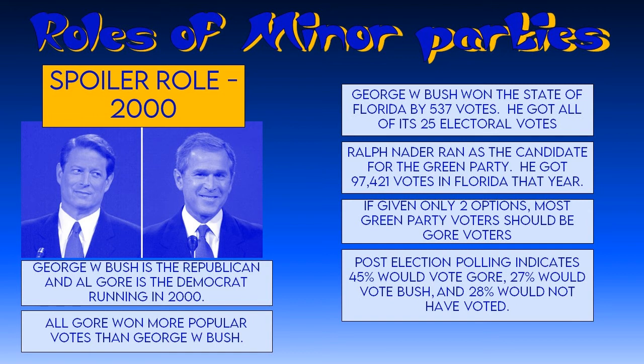After the election, they polled Green Party voters. 45% said they would have voted for Al Gore, 27% said they would have voted for George Bush, and 28% said they were only motivated by Ralph Nader and wouldn't have voted otherwise. So about half of those votes would go to Al Gore, a quarter to George Bush, and a quarter just wouldn't have happened. Since Bush won by 537 votes, if Ralph Nader had not run, Al Gore would have won Florida and would have become president after 2000.